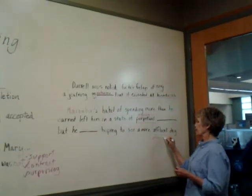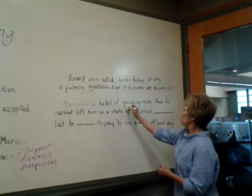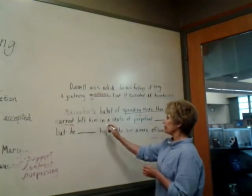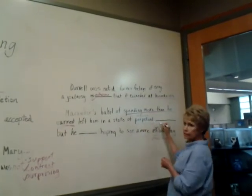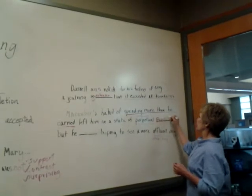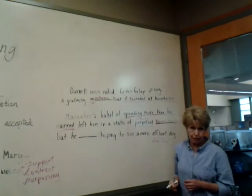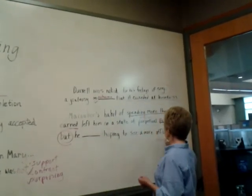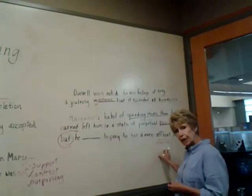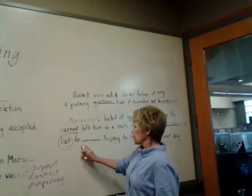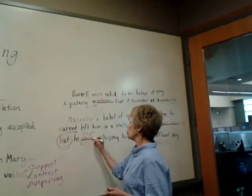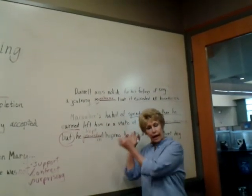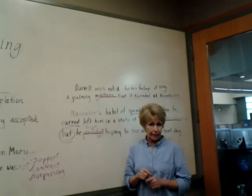Now let's look at our clues. His habit of spending more than he earned — so he spent more than he could afford to. This left him in a state of everlasting pennilessness, debt, poverty — anything like that. But here's a contrast clue: he blanked, hoping to see a more wealthy day. In other words, he's hoping to see a change in his situation — he kept hoping, he persisted in hoping. We fill in our blanks and analyze the clues just like we would in a one-blank sentence.